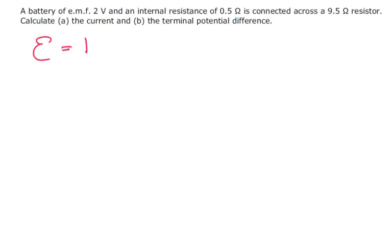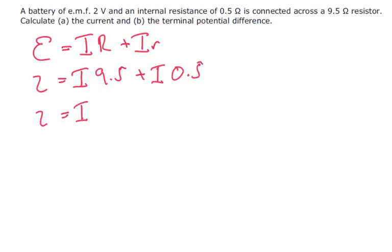So we're going to use our equation for internal and external resistance. The EMF is 2 volts, that's going to equal I times the external resistance, which is 9.5, plus I times the internal resistance, which is 0.5.